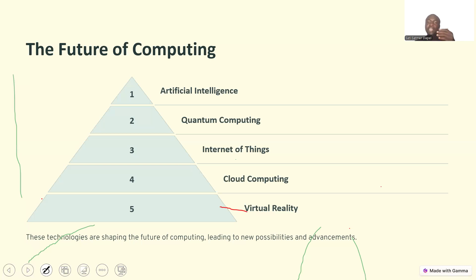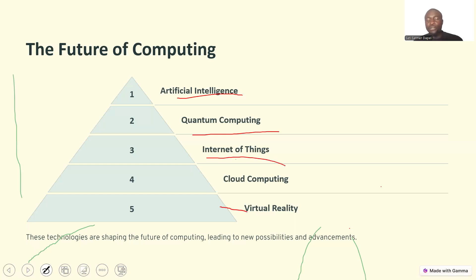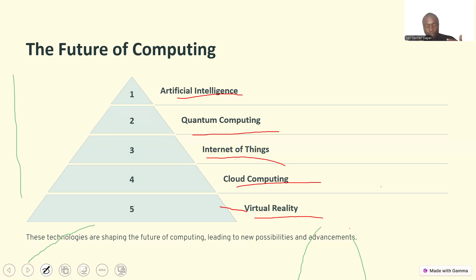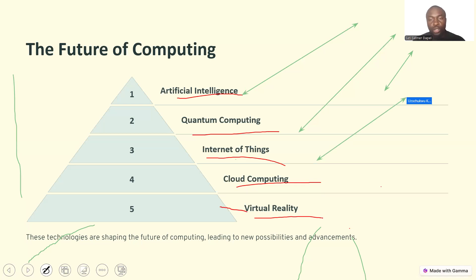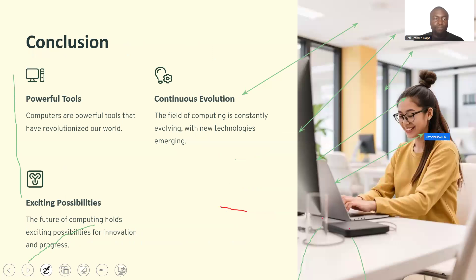Looking at the future of computing: we are currently in the age of artificial intelligence. After this we will have quantum computing, then the Internet of Things, then cloud computing, and then virtual reality. These are all the technologies shaping the world of computing today, and they are relevant to every field — marketing, accounting, business administration, and others.